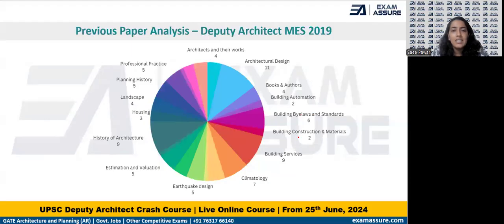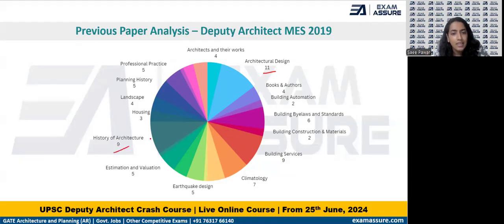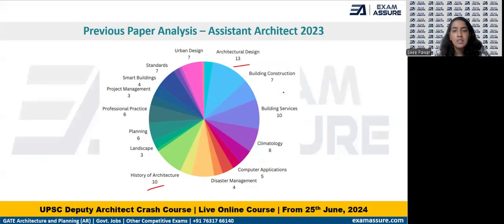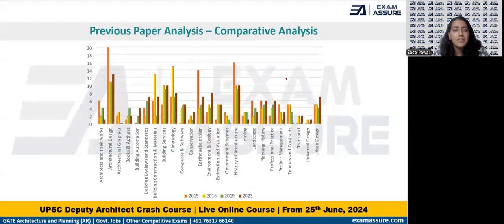Similarly, for the 2019 MES — Military Engineering Services — exam for Deputy Architect conducted by UPSC, we see a similar pattern: 11 questions from architectural design, 9 questions for history of architecture, then climatology, building services, and the rest. In another year, we again see 13 questions for architectural design, 10 for history of architecture, and 10 for building services, with a few for building construction.